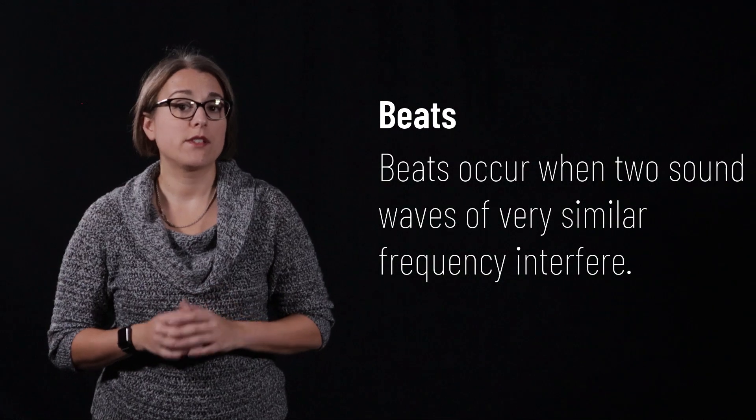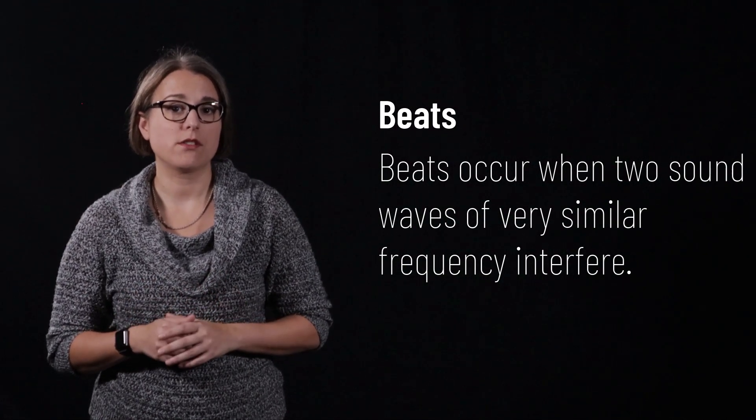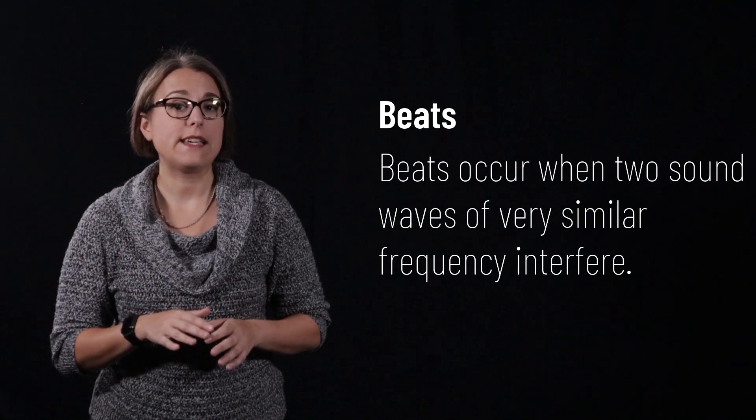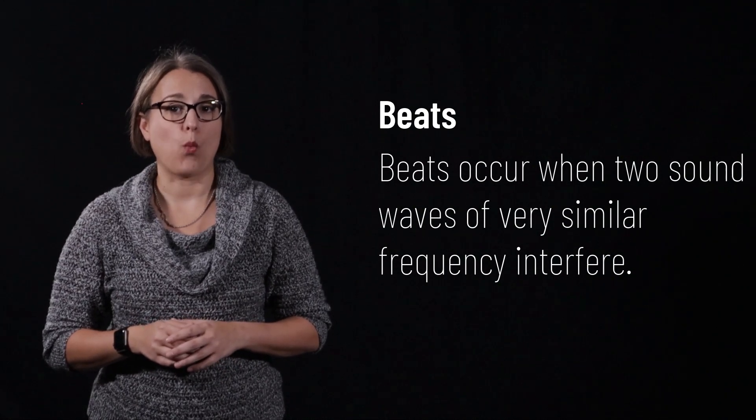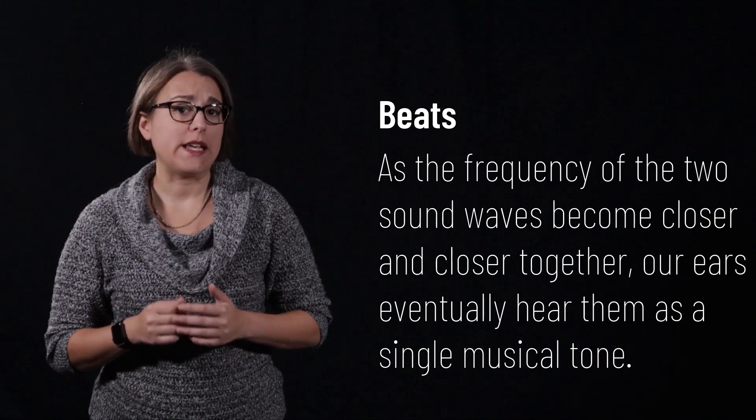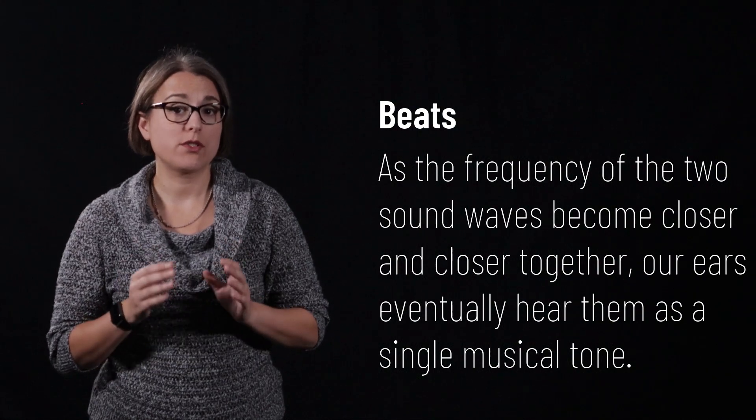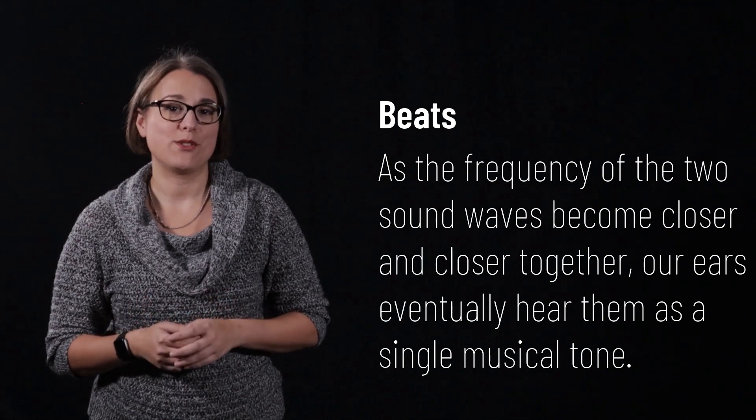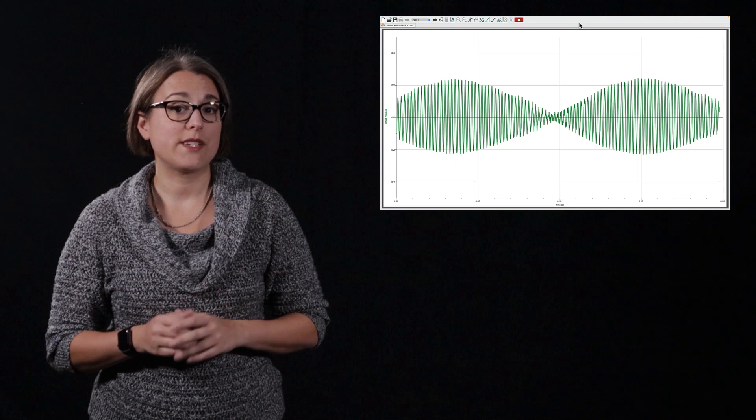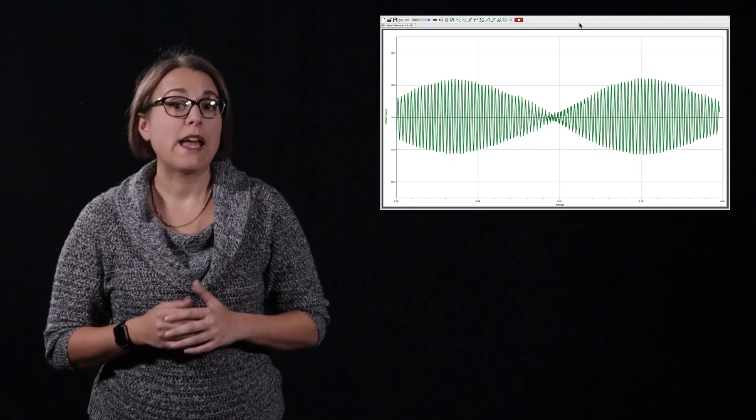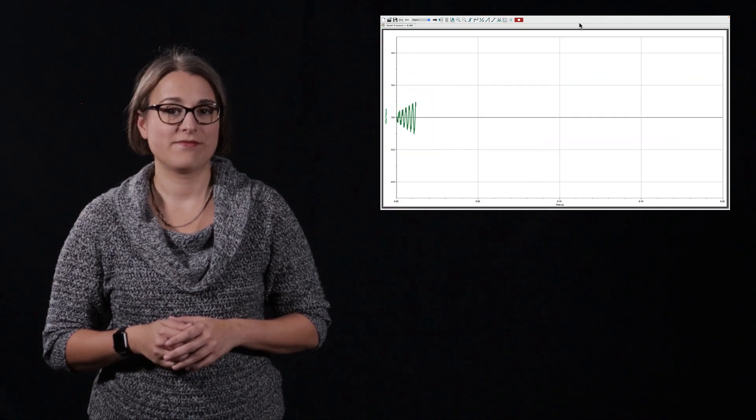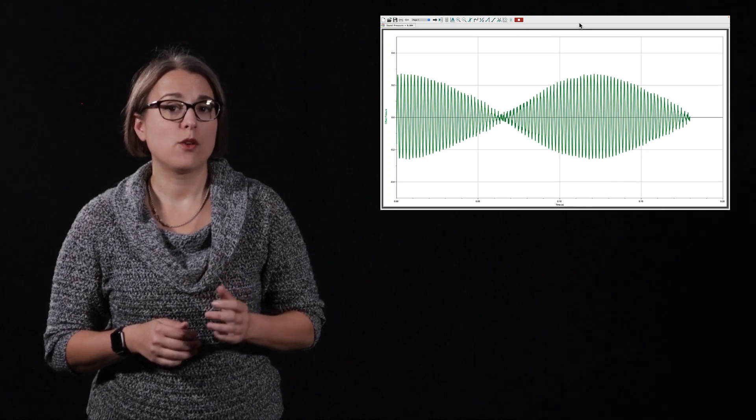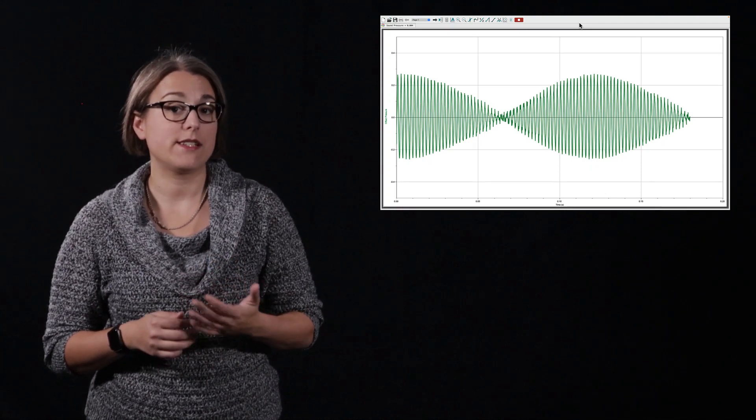The interference of sound waves leads to another effect, beats. Beats occur when two sound waves of very similar frequency interfere with each other. This interference creates an interesting wave that has an amplitude that increases and decreases in sounds like wah wah wah wah wah. As the frequencies of two interfering waves become close together, our ears eventually become capable of hearing the two different pitches together as a single musical tone. Here I have two sound sources at frequencies of 480 Hz and 489 Hz.